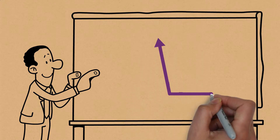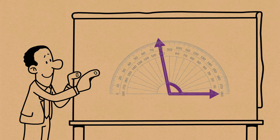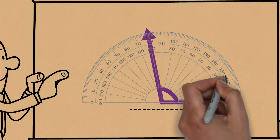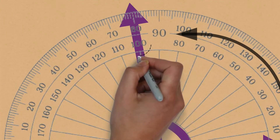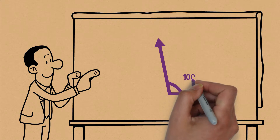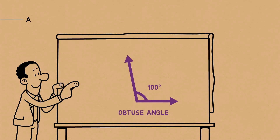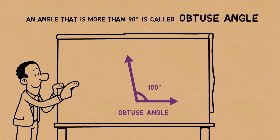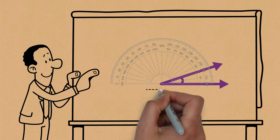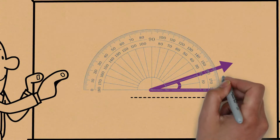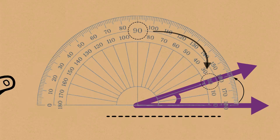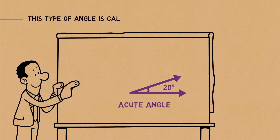Let's measure this angle together. We can see that this angle is more than 90 degrees. The base part is over here, and when you start from zero, it goes on and passes 90 towards this side — it passes 90 to 100. So an angle that is more than 90 degrees is called an obtuse angle. This angle is 100 degrees. And an angle that is less than 90 — we've got the base on zero and when you keep moving upwards, we see that this is 20 degrees — is called an acute angle.